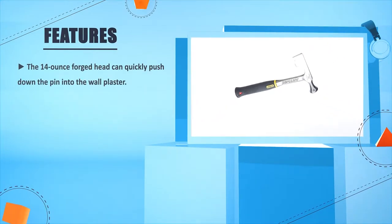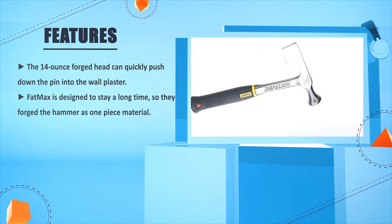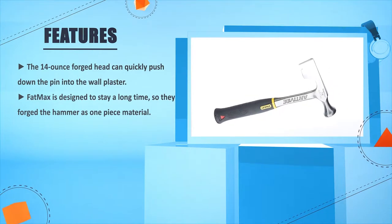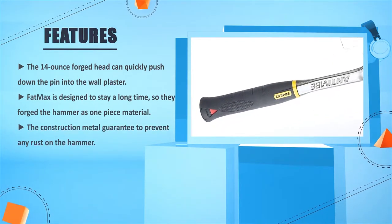The 14-ounce forged head can quickly push down the pin into the wall plaster. FatMax is designed to last a long time, so they forged the hammer as one piece material. The construction metal is guaranteed to prevent any rust on the hammer.